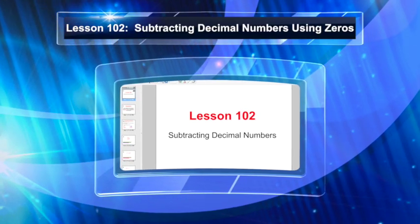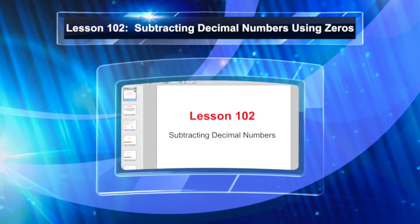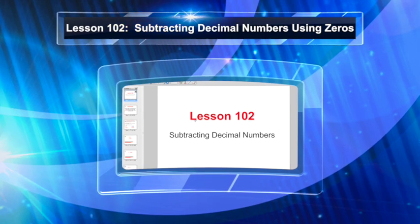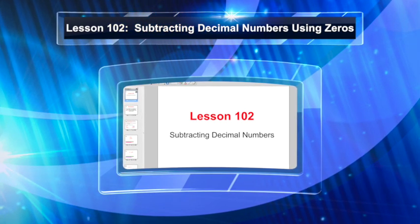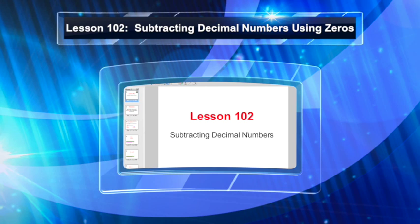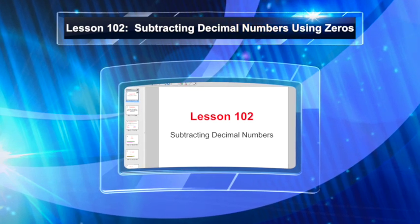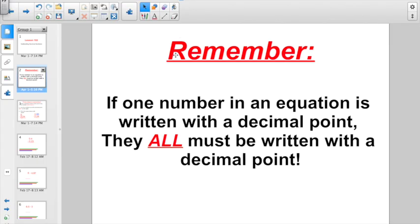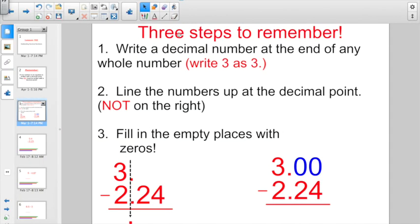Alright, good morning everybody. We are sliding back over towards the decimal side of things. Today, get ready for lesson 102. We are talking about subtracting decimal numbers. And the big thing to remember, we've covered this before, if one number in an equation is written with a decimal point, they all must be written with a decimal point. How many times have you heard me say that? So, we've gone over these three steps before also.